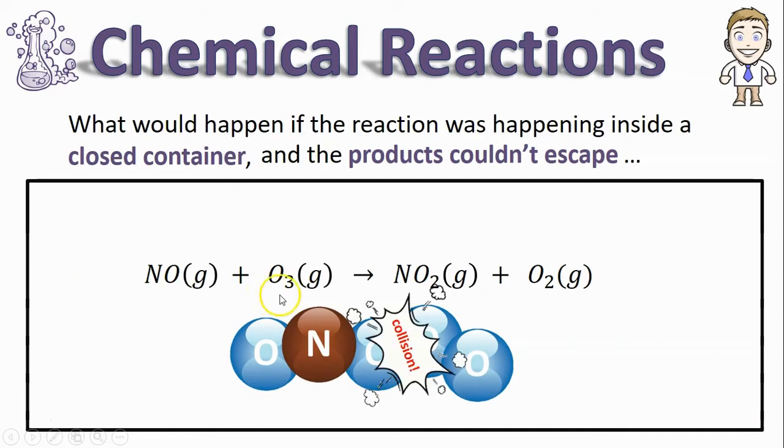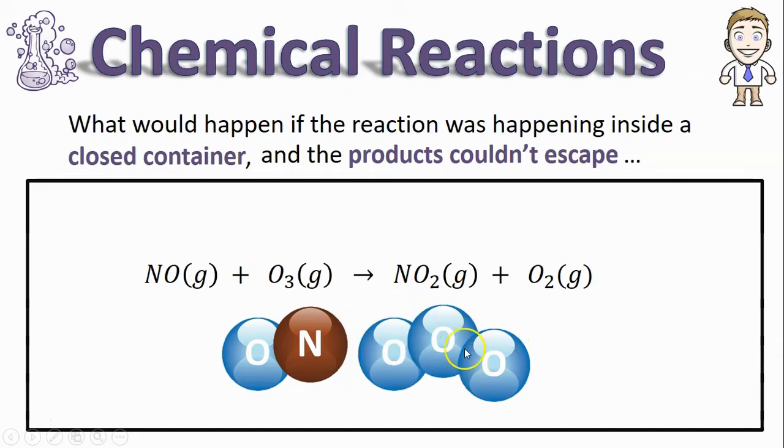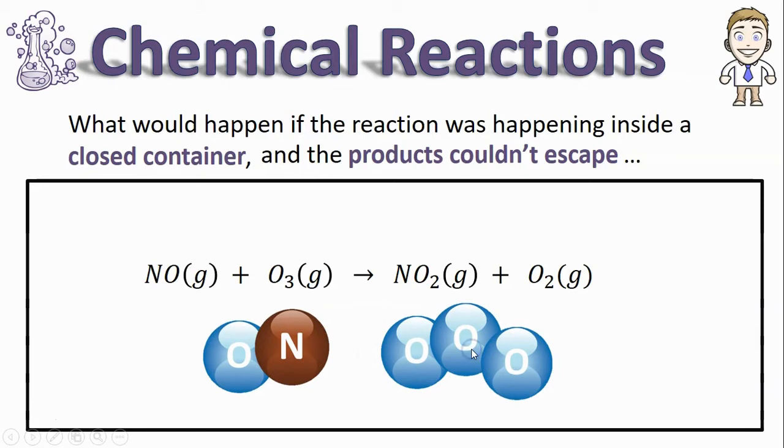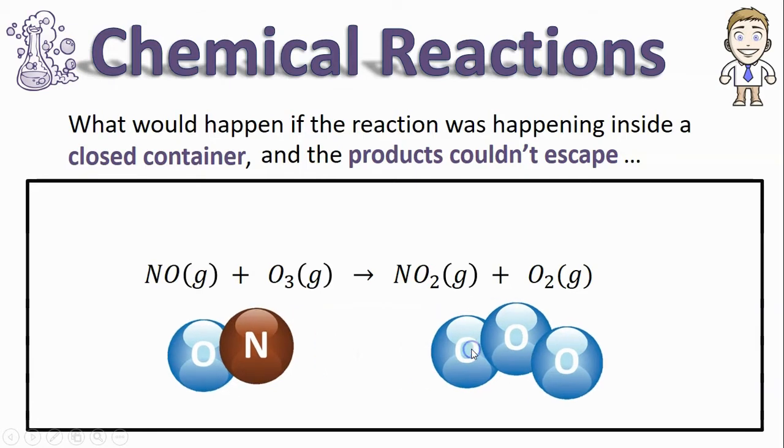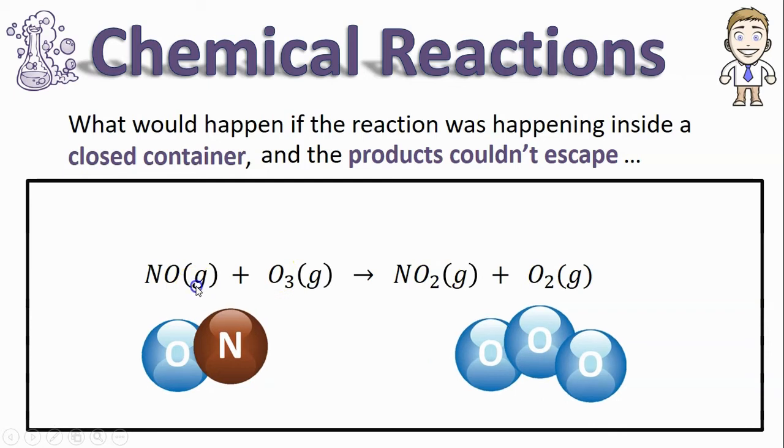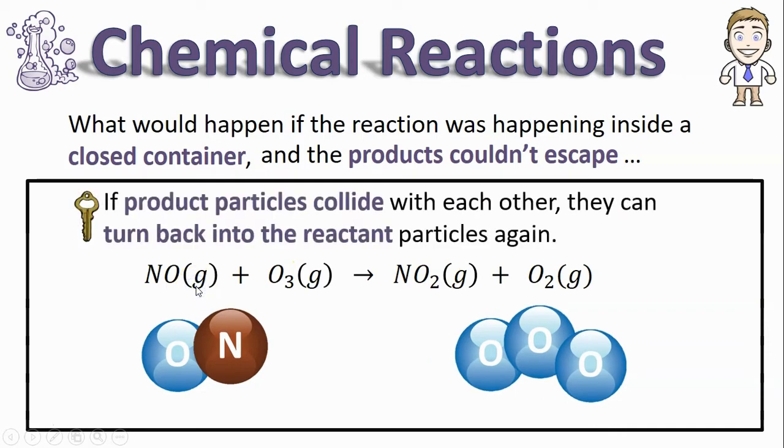If that collision happens, the oxygen that's attached to the nitrogen will detach from the nitrogen and instead attach to the other two oxygens again. What's really taking place here is that the products we just made have turned back into the reactants NO and O3 one more time.